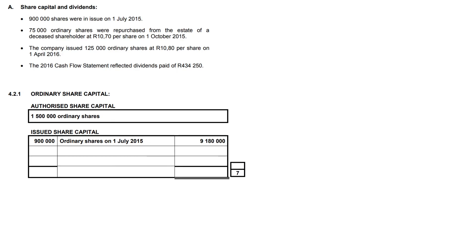We need to complete our ordinary share capital note. The amounts in bold are going to be given to you in your answer booklet — the 900,000 and the 9,180,000 — and these typically come from the extract of your balance sheet.